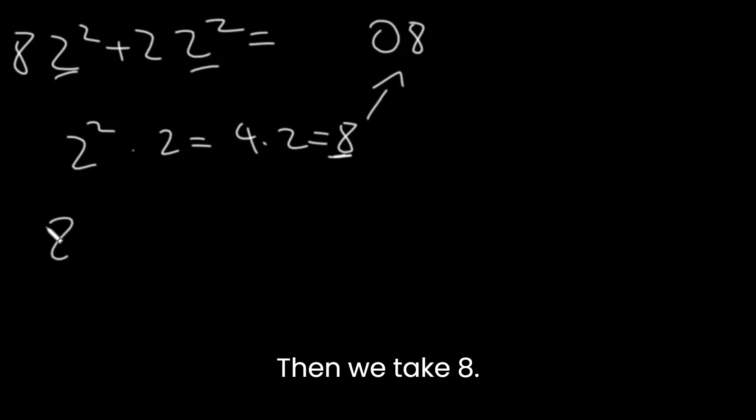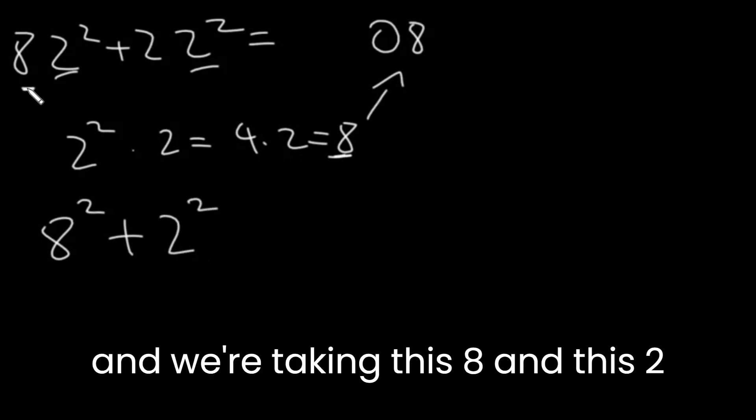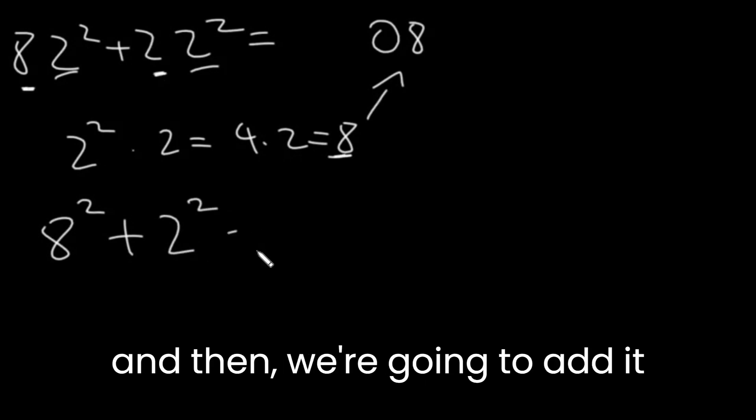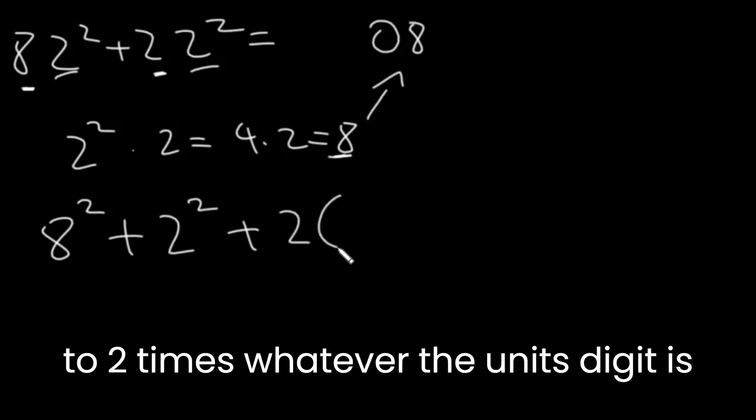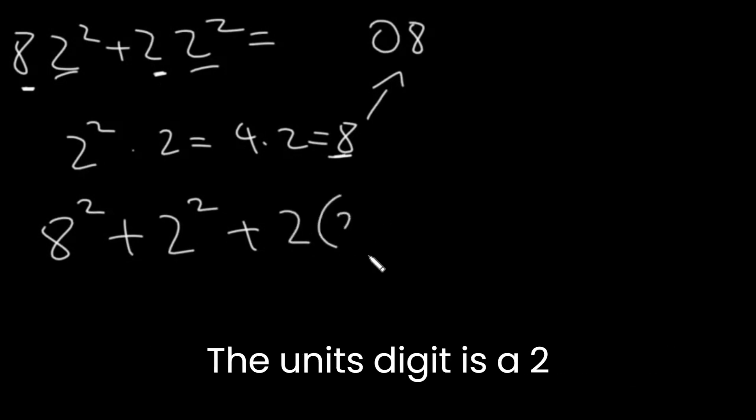Then we take 8 and square that plus 2 and then square that, and we're taking this 8 and this 2, and then we're going to add it to 2 times whatever the unit's digit is. The unit's digit is a 2.